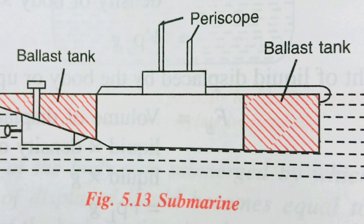Flotation of submarines: a submarine is a fish-shaped watertight boat provided with several ballast tanks in its front and rear parts. When a submarine is to dive, its ballast tanks are filled with water so that the average density of the submarine becomes greater than the density of seawater and it dives. If the submarine is to rise, water from the ballast tanks is forced out into the sea by compressed air, making the average density less than seawater, so it rises to the surface.